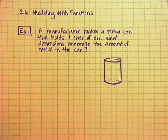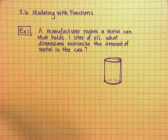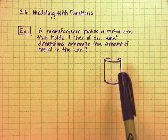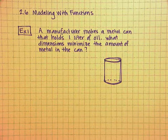In this first example, we have a manufacturer who's making metal cans. Each can holds a liter of oil. And what we want to know is what are the dimensions of this can that will minimize the amount of metal used, because obviously that'll be cheaper.